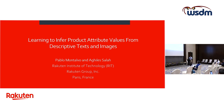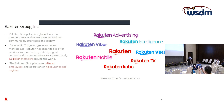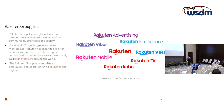Rakuten is a global leader in internet services, established about 25 years ago in Tokyo, Japan. Initially known as a marketplace, it has since expanded to provide many more services including Rakuten Viber, Rakuten TV, and advertising. It has about 1.6 billion users across the world and over 28,000 employees with operations in 30 countries.